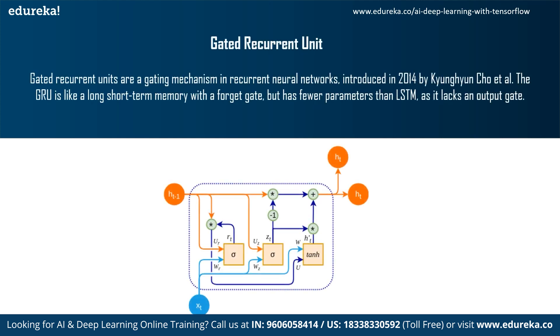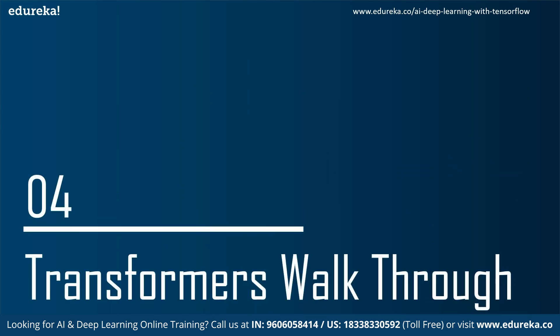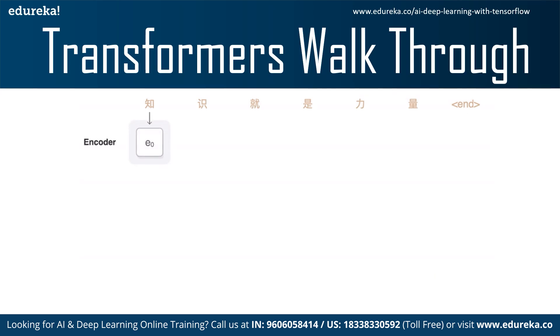The next type is the Gated Recurrent Unit, or GRU. GRU is a type of recurrent neural network that is in certain cases advantageous over LSTM — it uses less memory and is faster, though LSTMs are more accurate when using longer datasets. The trend leading to improvement is clear: the model should be capable of remembering and taking in longer input sequences. The game changer for sequential data was the development of Transformers, based on a paper called 'Attention is All You Need.'